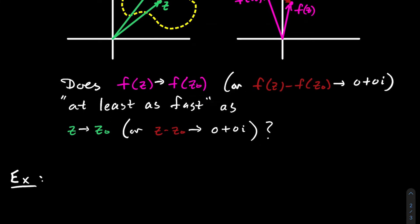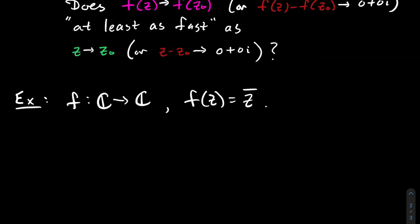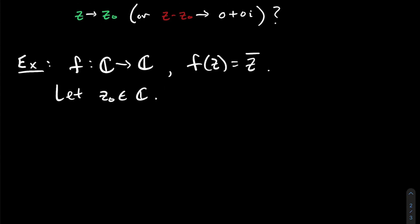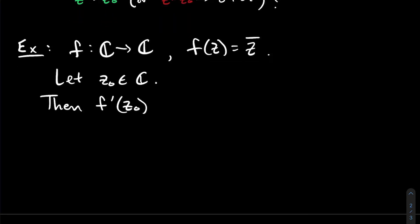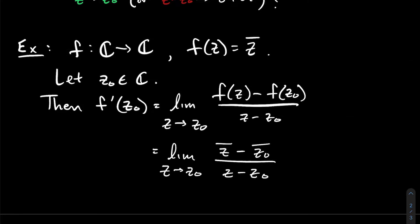Let's do a little example about what we actually do to check if a complex function is differentiable. One interesting function is the complex conjugate — is that thing differentiable anywhere? Let's let z₀ be any complex number. Then f′(z₀) is the following limit — just write down the definition. Now, f(z) is z-bar and f(z₀) is z₀-bar, so the numerator becomes z-bar minus z₀-bar.